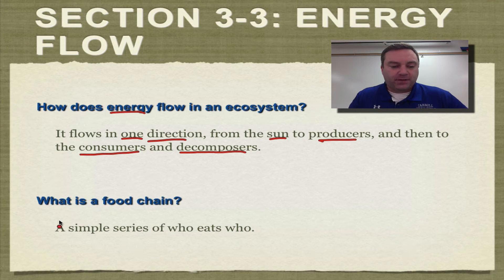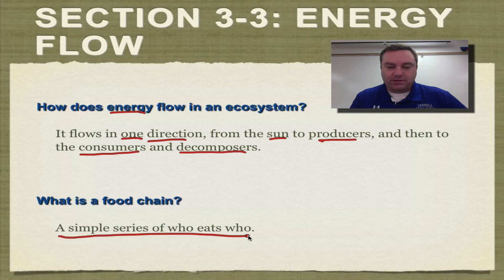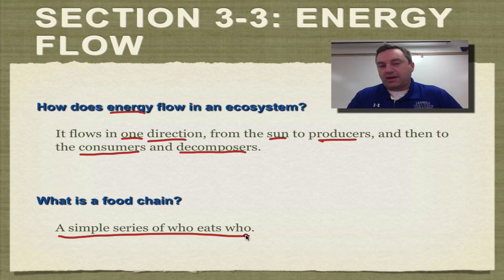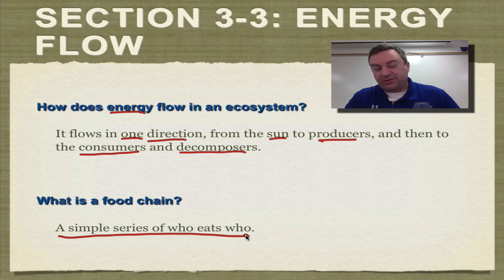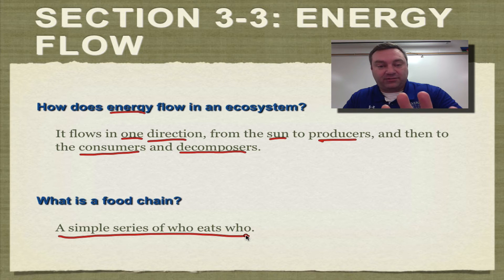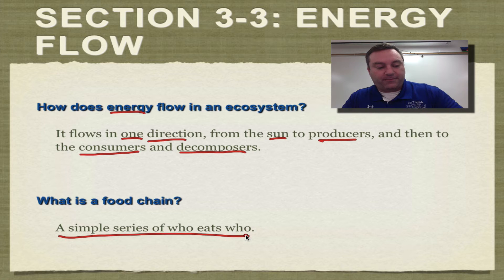What's a food chain? To keep it simple, it's just a series of who eats who. There are typically certain levels — usually five levels at the most, but often just four.